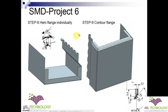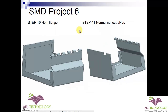Once that is done, we will be creating a contour flange with these dimensions, sweeping it from this boundary to here. In that sweep we will also get a good close corner.